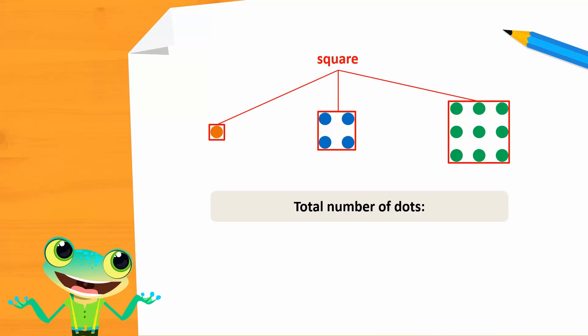In other words, the number of rows is equal to the number of columns. In the first group, the number of rows is 1, and the number of columns is also 1. So we have 1 times 1, which is equal to 1 dot.